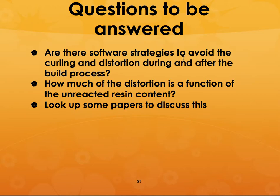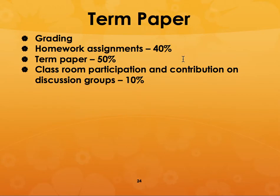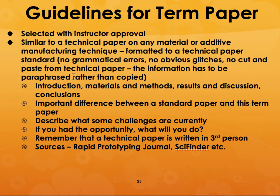This is not a homework problem, but you should take a look at some papers on that topic. Regarding course grading: homework assignments are going to be approximately 50% and the term paper is going to be 50%. I had originally thought about including classroom participation and discussion groups up to 10%, but I'm not sure that will be the case, so the current plan is homework 50% and term paper 50%.